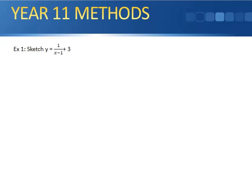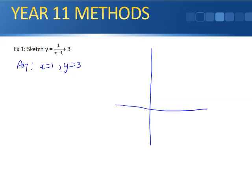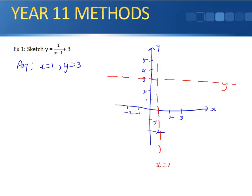Example 1: sketch y = 1/(x - 1) + 3. This has asymptotes at x = 1 and y = 3. Starting to sketch it on the axes — marking the asymptotes first at x = 1 and y = 3. Because it's a positive graph, the curve sits in the relevant quadrant relative to those asymptotes.